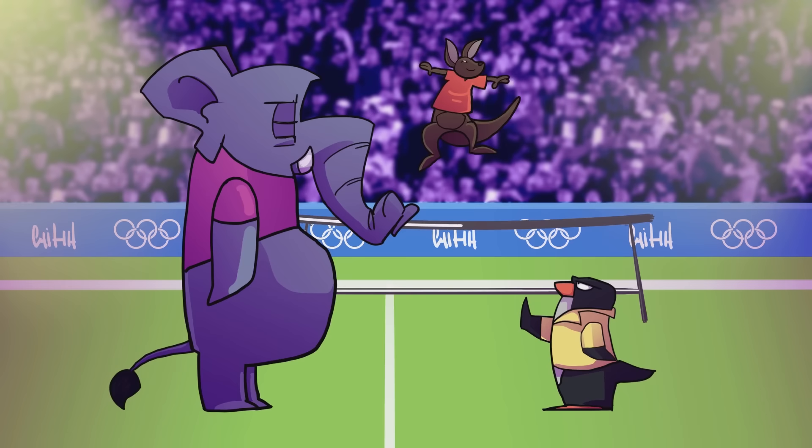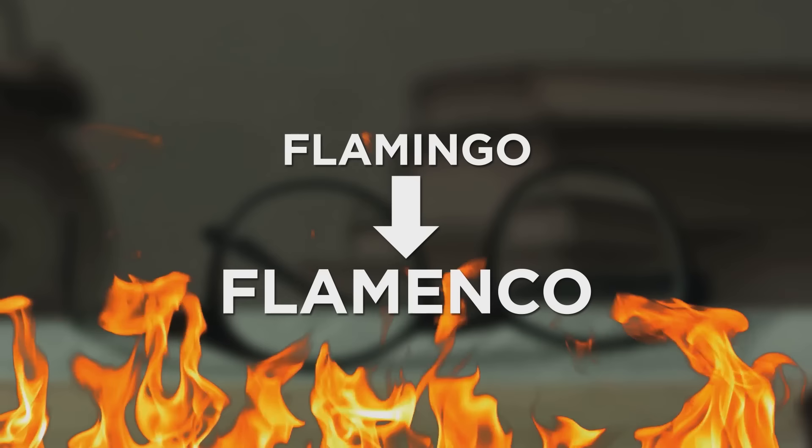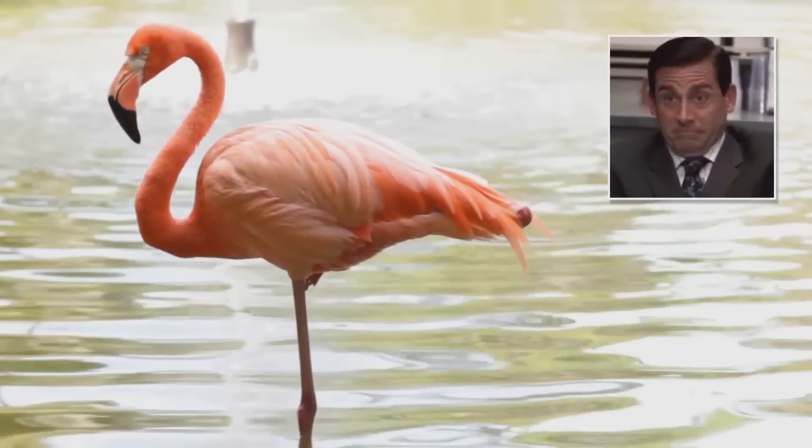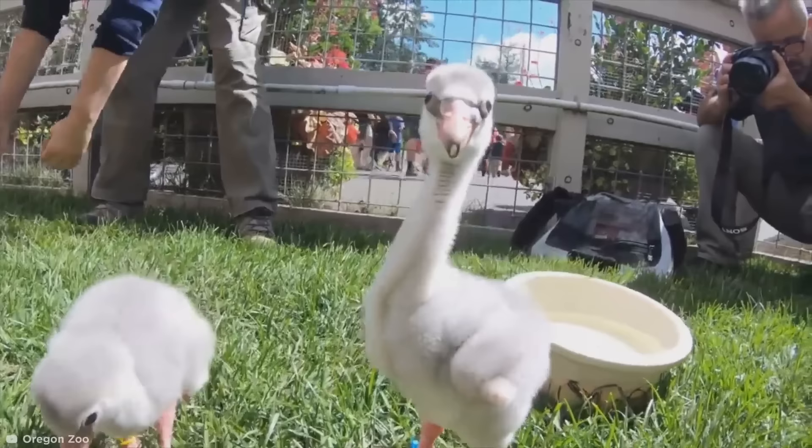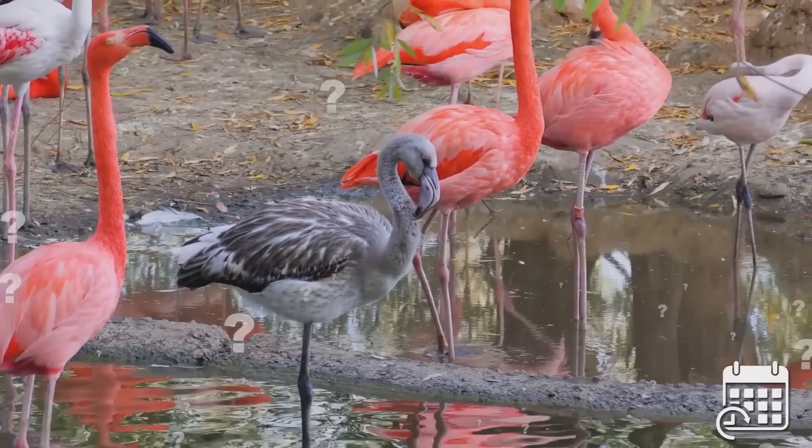Flamingos aren't actually pink. The word flamingo comes from the Latin word flamenco, meaning fire, which refers to the characteristically bright color of the bird's feathers. But prepare to be shocked, because flamingos aren't actually pink. Instead, flamingos are born gray or white and only turn pink over the first couple of years of their life. But why?